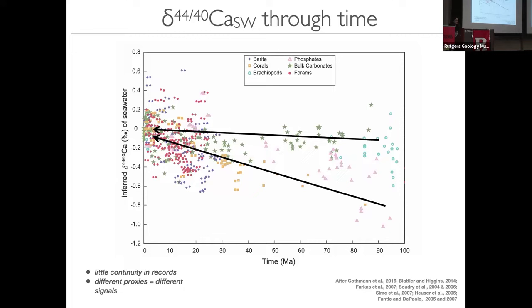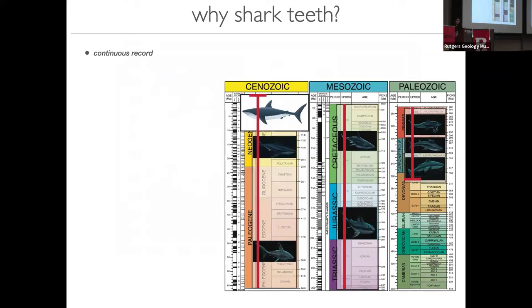So in an attempt to understand what the calcium cycle has looked like over geologic time, folks have looked at various different substrates or archives and tried to reconstruct the calcium isotope composition. I just want to draw your attention to the fact that there are many different colors and symbols here. And each one of these colors and symbols represent a different type of archive or a different type of record that folks have used to reconstruct. So they've looked at barite and corals and brachiopods and carbonates and forams and a whole slew of things. And this is lovely. It has helped guide so much of our understanding of the ocean over the last hundred million years, but it's also raised some more questions than it has answers.